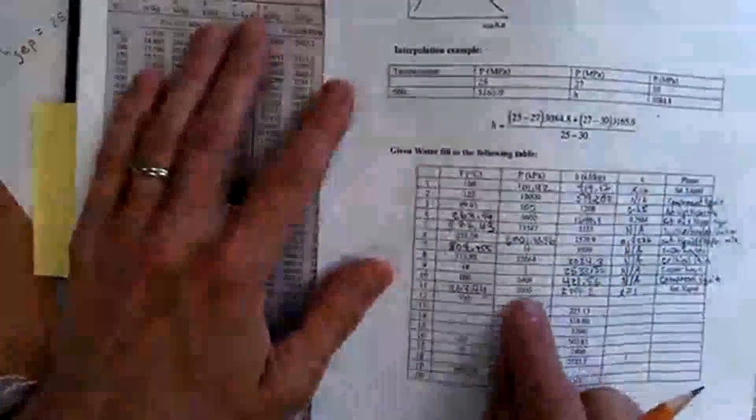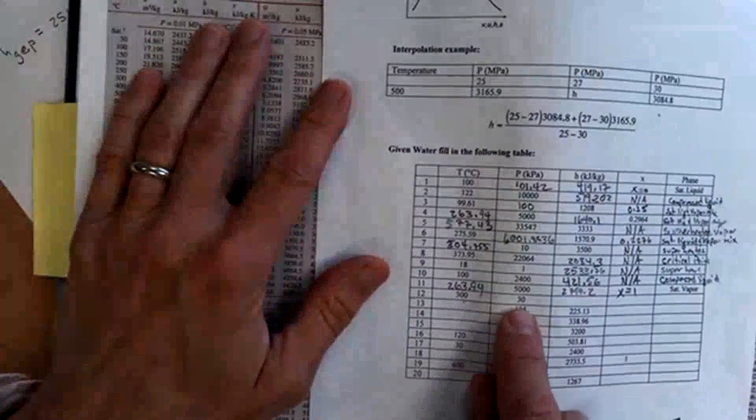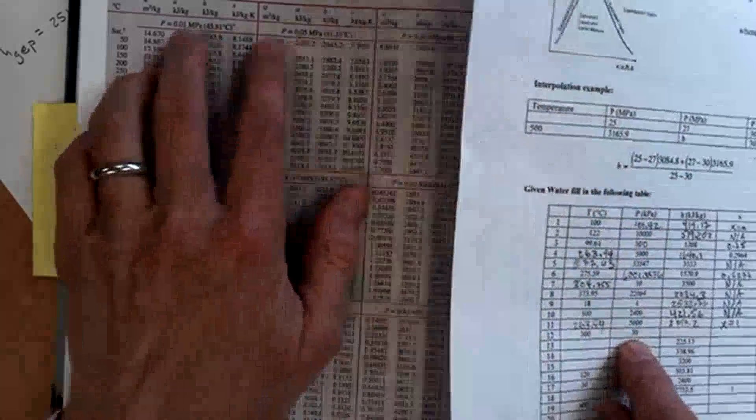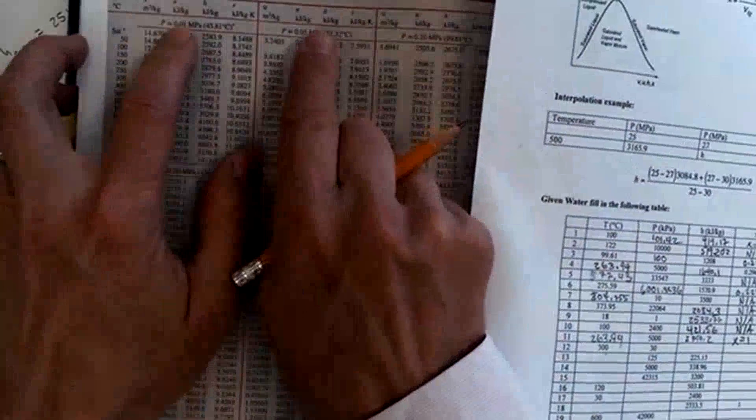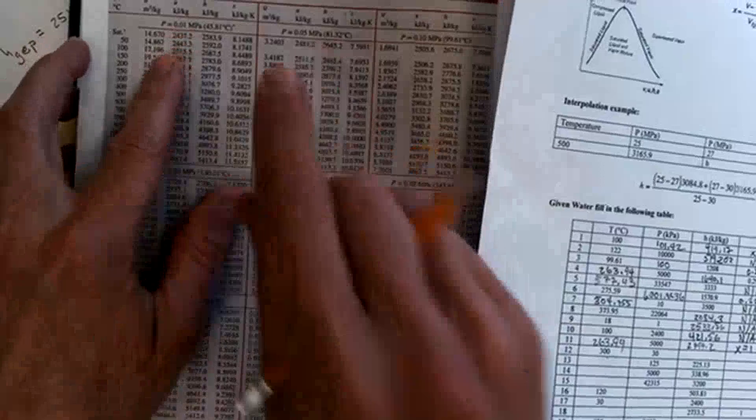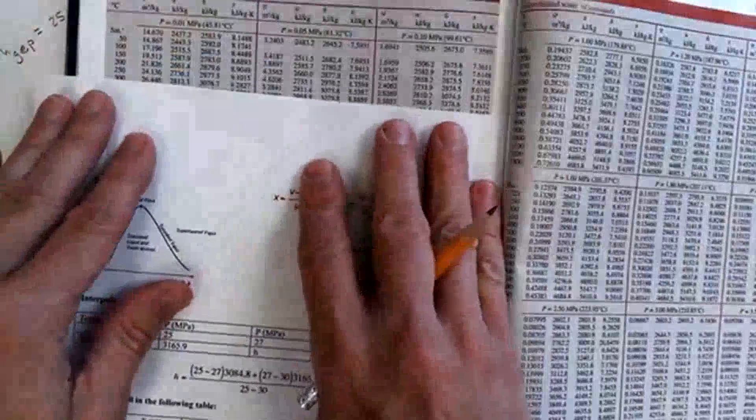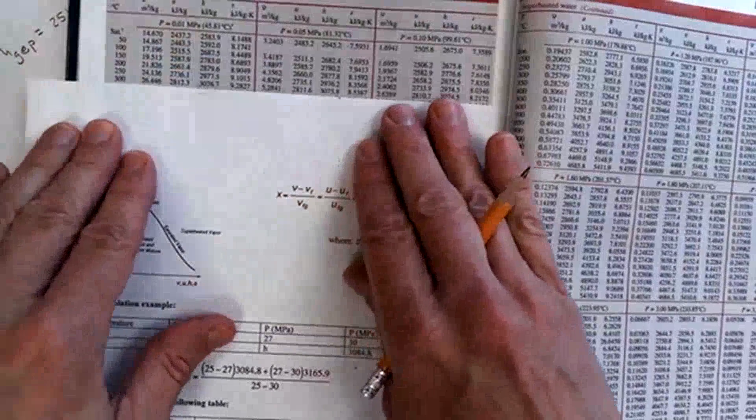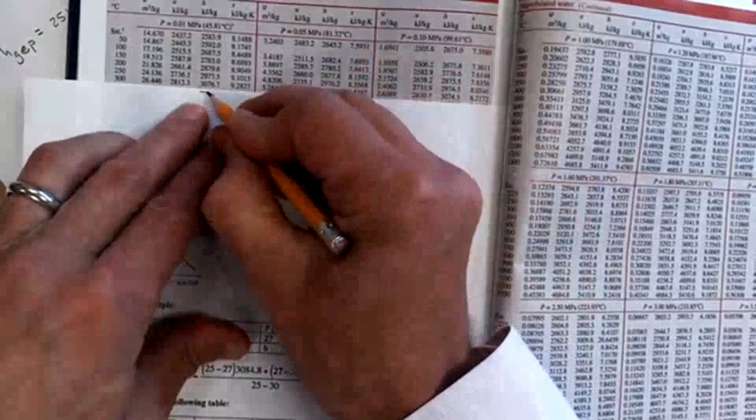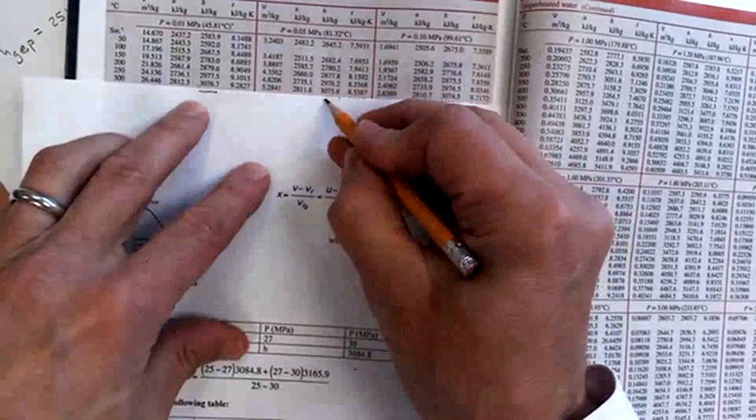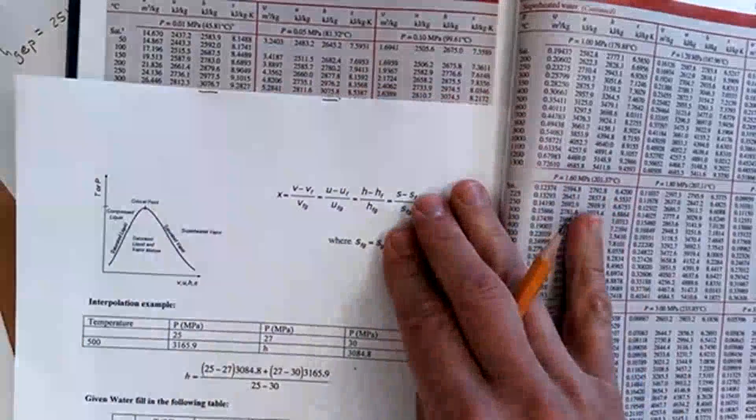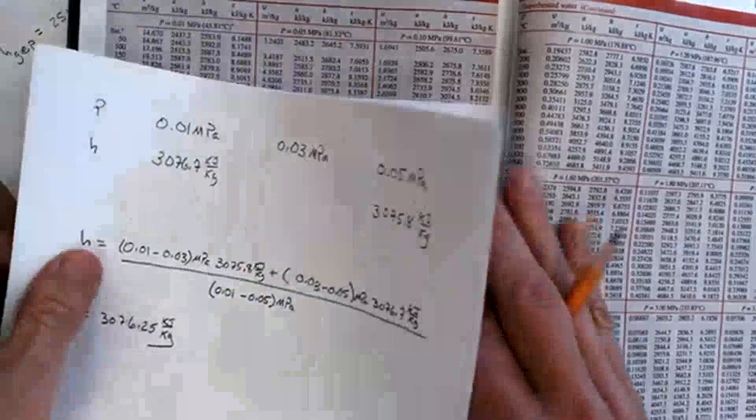Let me go to the superheated tables. 30 kPa is 0.03 megapascal, so it's somewhere between 0.01 and 0.05 at 300 degrees Celsius. So it's going to be somewhere between 3076 and 3075. So I should interpolate.